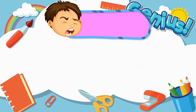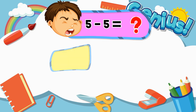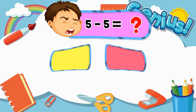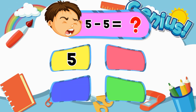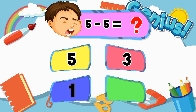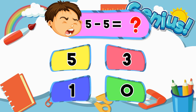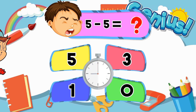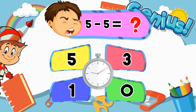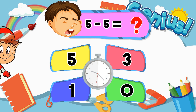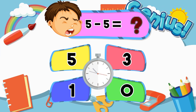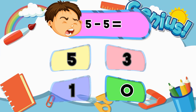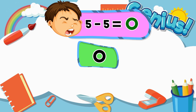What is 5 minus 5? 5, 3, 1, 0. The correct answer is 0.